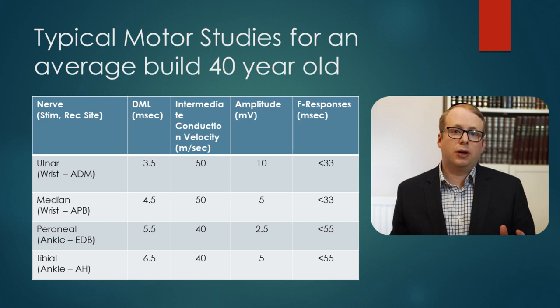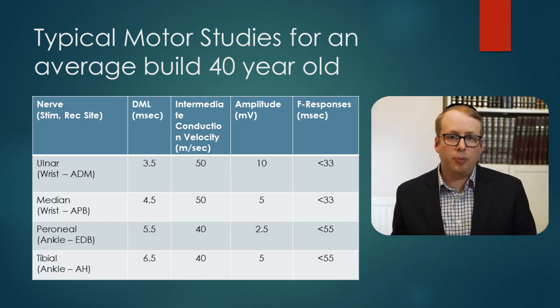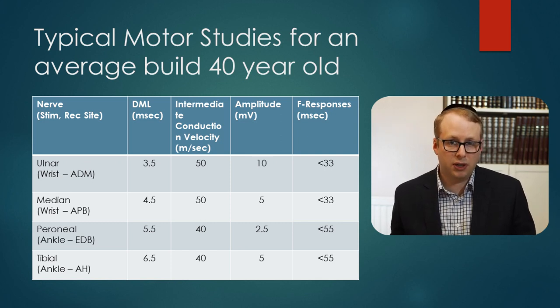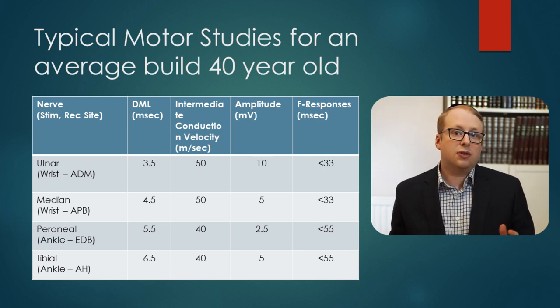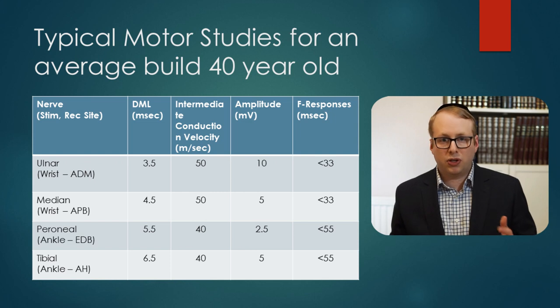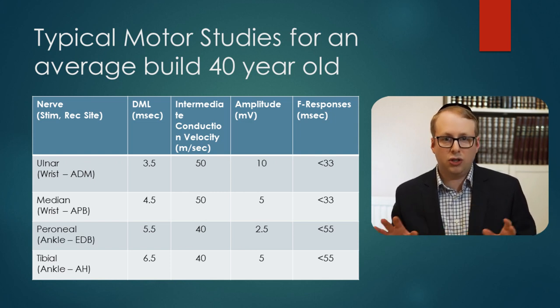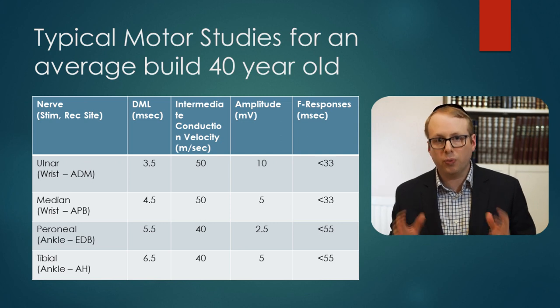The final numbers to mention are the F-wave responses. In the upper limb, for a person of average height, these should be less than 33 milliseconds, and in the lower limbs, these should be less than 55 milliseconds. To recap, here is a summary of some of the data we would expect. Whilst these cannot be perfect, and you shouldn't use them for making absolute diagnoses, these are roughly in the ballpark of what we would expect at varying ages.